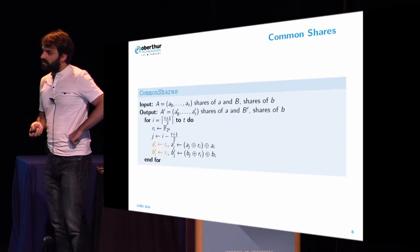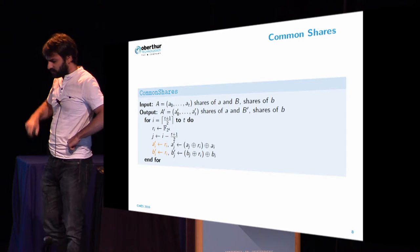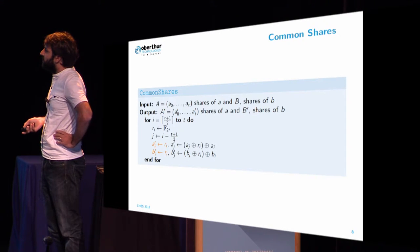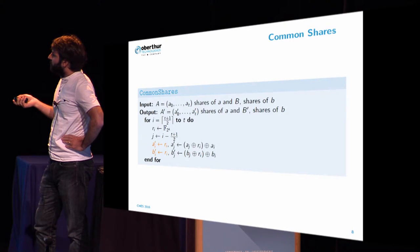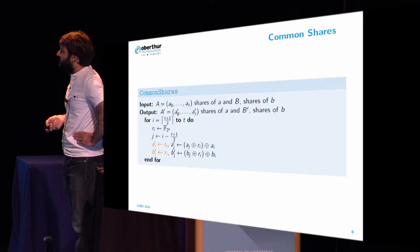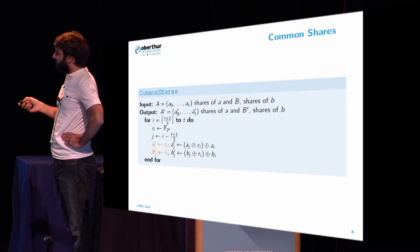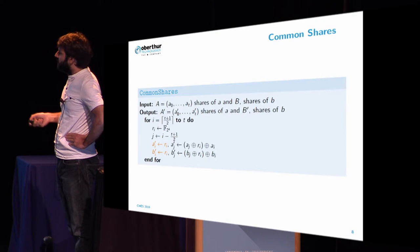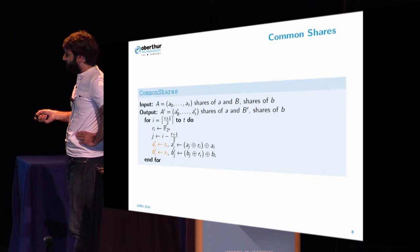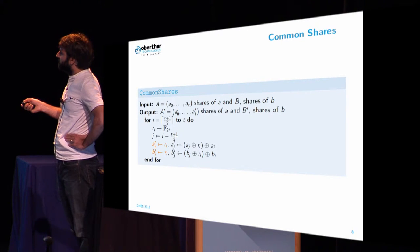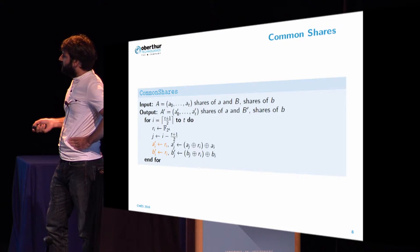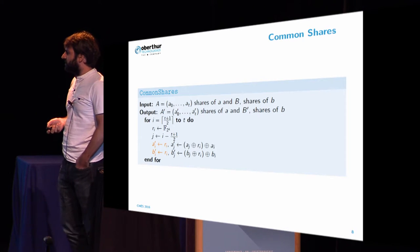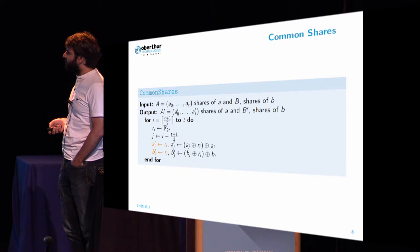So how can we have two shared variables which have common shares? It's pretty simple. Starting from A and B, two shared variables, we compute A' and B', which will have half of the shares in common. We simply set some shares with the same value, which can be random, or we could have also just set the value of B taking half of the value of A, and we set the same value for half of the shares, and we just compensate for the other half of the shares in order to remain coherent.